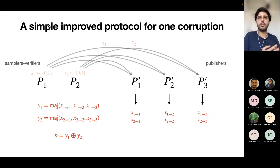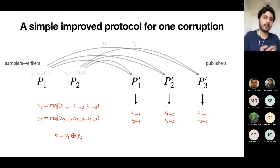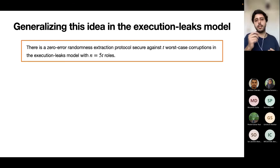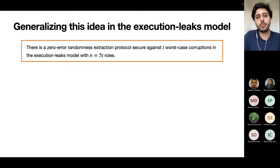We now have this protocol for one corruption with five roles, whereas before we needed seven roles from 6T+1. Can we generalize this to many corruptions? Yes — we can generalize this idea, but only in the execution leaks model. We combine it with the previous idea from the sending leaks setting and improve the number of roles from 6T+1 to 5T. When T equals one, we recover exactly this protocol.